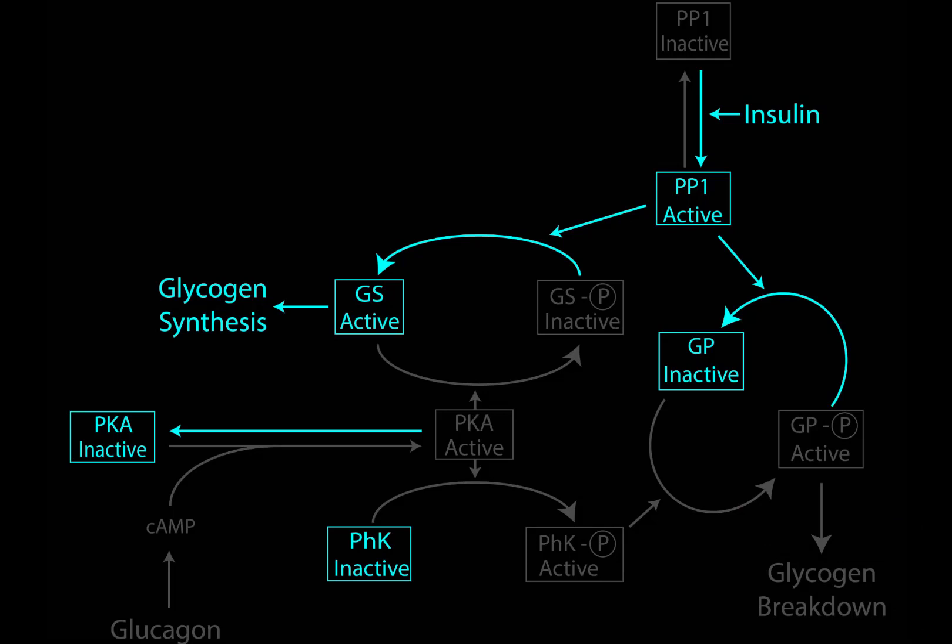The other thing that the active form of PP1 will do is activate glycogen synthase. So with glycogen synthase active, we have glycogen synthesis turned on. So through these signaling pathways, insulin has the effect of turning on glycogen synthesis and turning off glycogen breakdown.